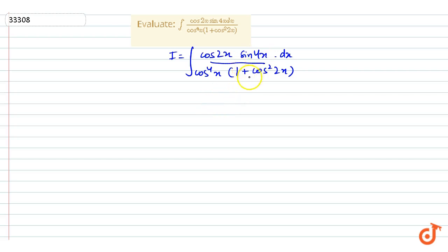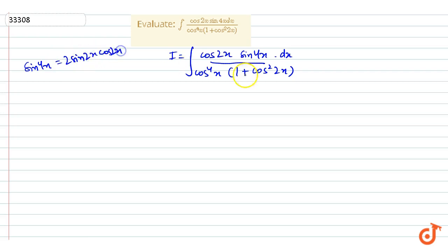We will keep the term in cos and keep the term in sin. We can keep the term in cos and then find the term in sin. First, we have to find sin 4x. We can write sin 4x as 2 into sin 2x into cos 2x. And here we have cos power 4.